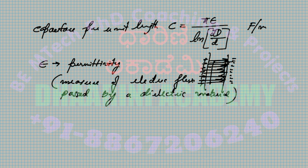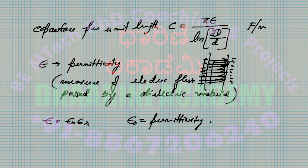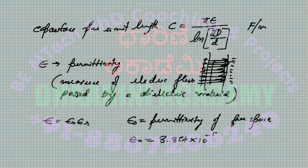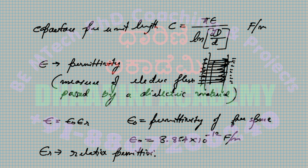Permittivity ε = ε₀ · εᵣ, where ε₀ is the permittivity of free space = 8.854 × 10⁻¹² F/m, and εᵣ is the relative permittivity of the material.